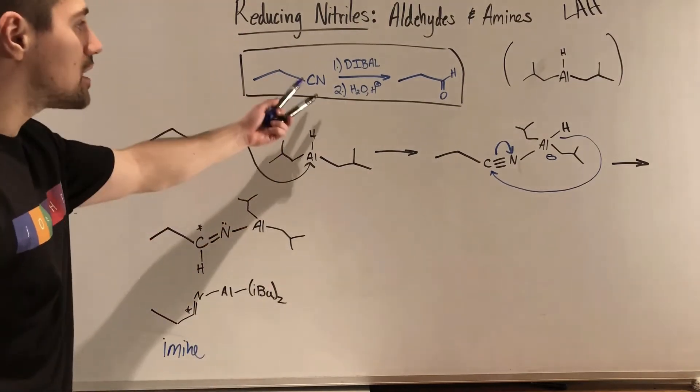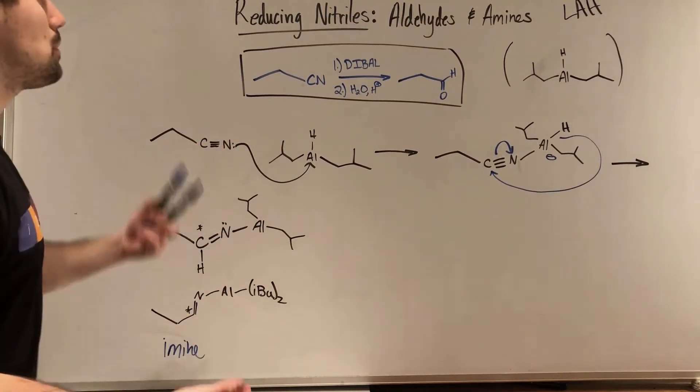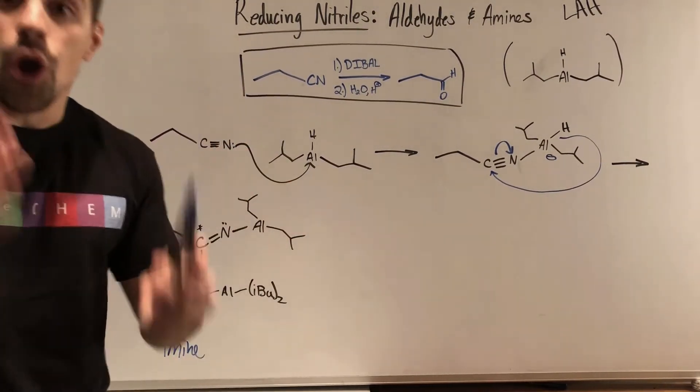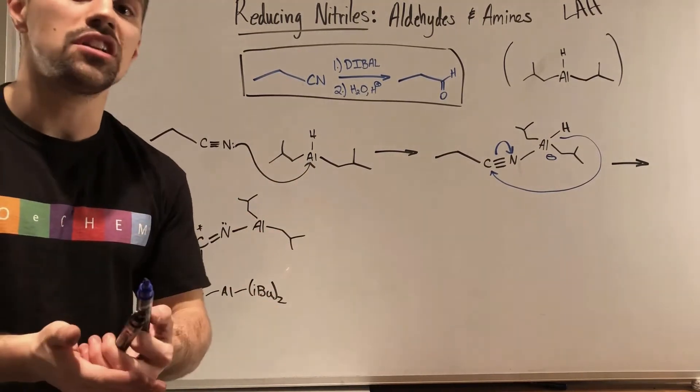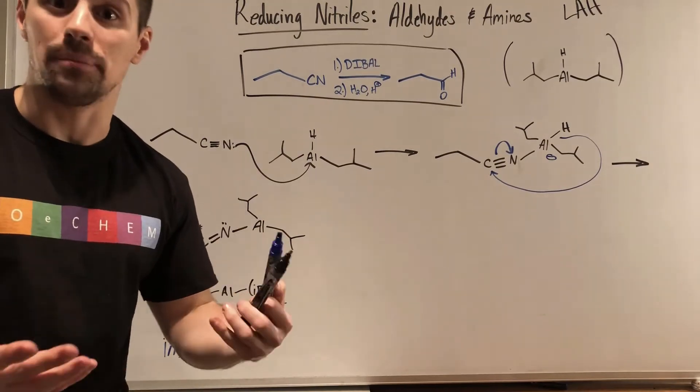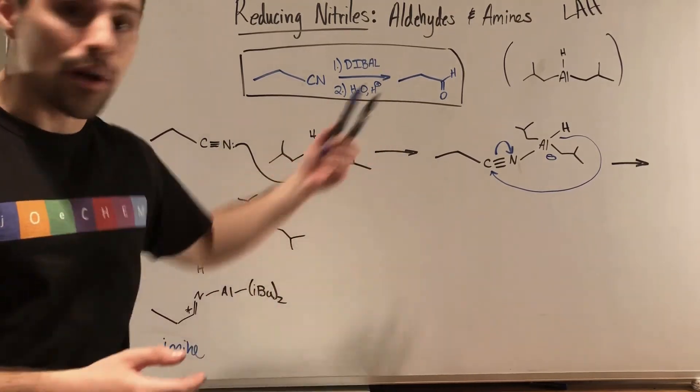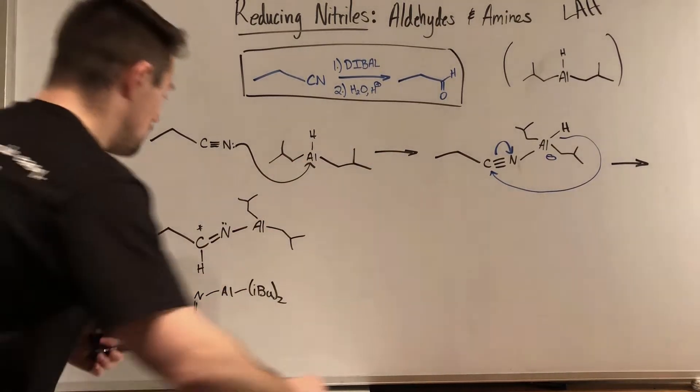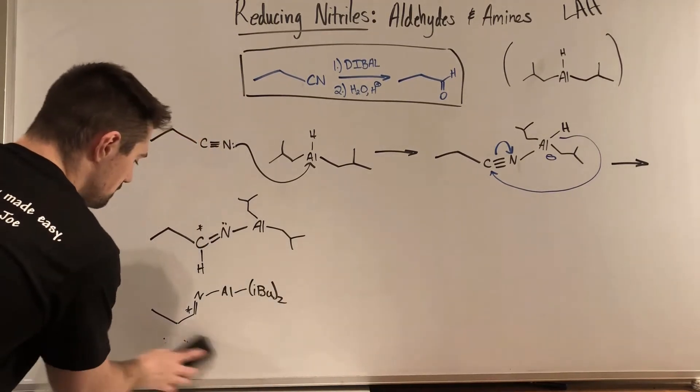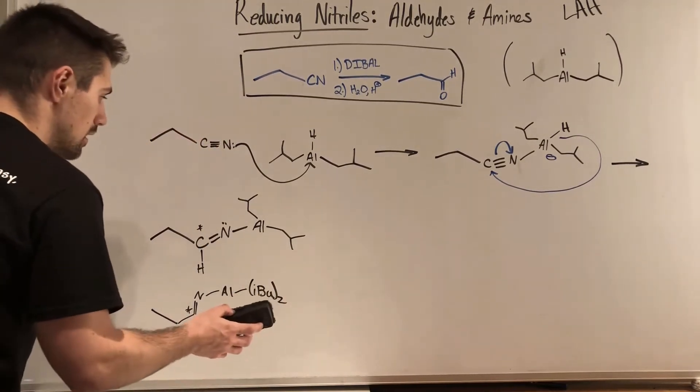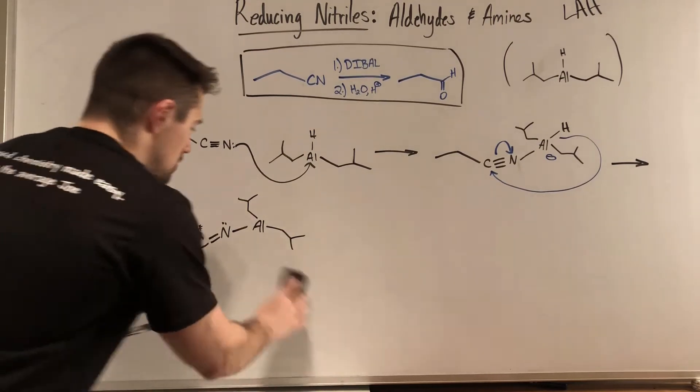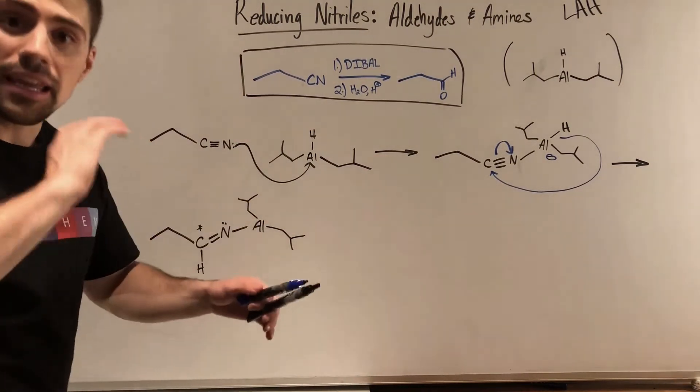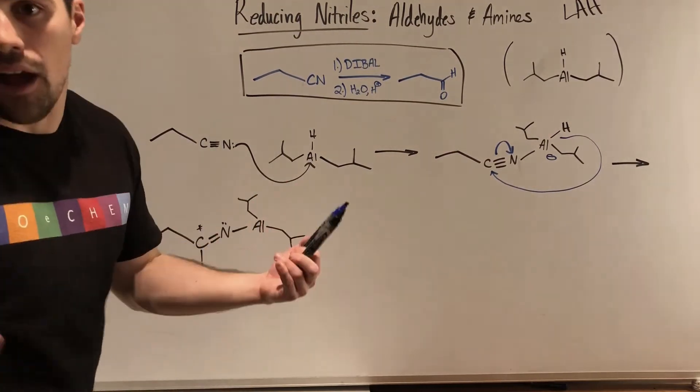Actually, that something is to move these up here as a double bond and give this nitrogen a lone pair. Here we go. Carbon, double bond, nitrogen, lone pair, bond to aluminum. And aluminum still has the two isobutyl groups off of it. We actually produced an imine in this step. And that was the end of number one.